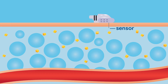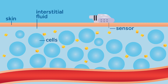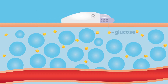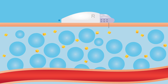The sensor is inserted under the skin so it is in contact with the fluid between your cells, called interstitial fluid. The transmitter is connected to the sensor. The sensor then measures the glucose in the interstitial fluid and sends this information to the transmitter, which then wirelessly sends this data out to your device.